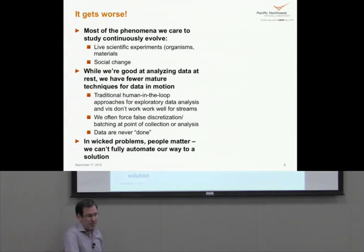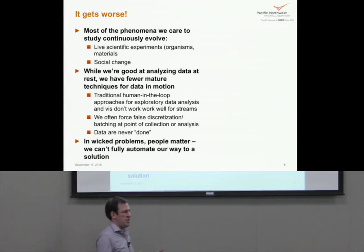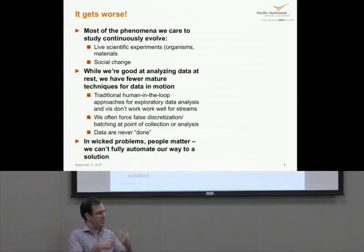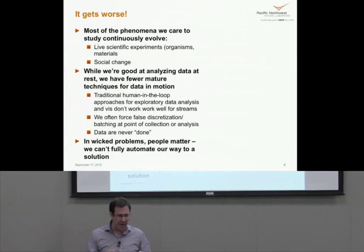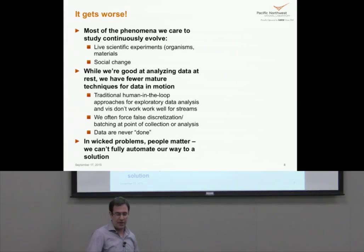It gets worse because most phenomena we want to study continuously evolve. We're doing live scientific experiments, studying how organisms or materials grow and change, studying social phenomena, disease, or social unrest in the Middle East — all of those things continually evolve. We often artificially discretize the phenomena just to put it into a batch data set we can analyze with an offline tool. But fundamentally, most of the advancement we've made in data-driven discovery over the last 20 years has been with data at rest, while the world keeps changing underneath.